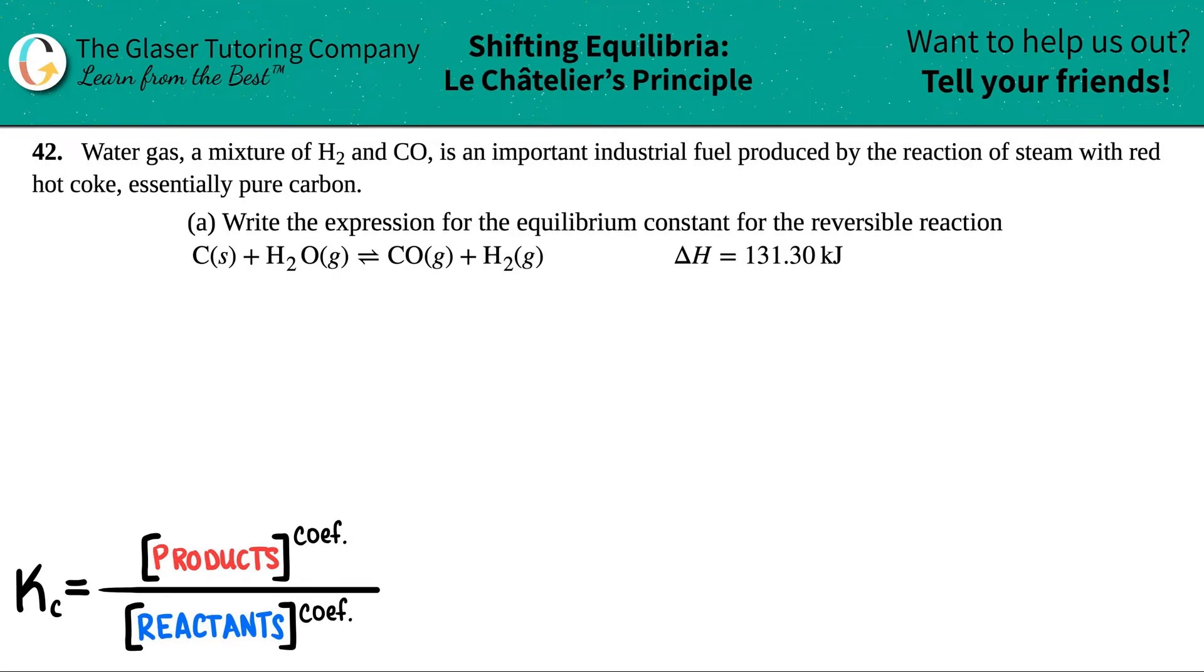Number 42. Water gas, a mixture of H2 and CO, is an important industrial fuel produced by the reaction of steam with red hot coke, essentially pure carbon.